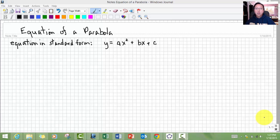Today we're going to learn how to derive the equation of a parabola. A parabola is a type of equation that's called a quadratic equation. And the standard form of a quadratic equation looks like this: y equals ax squared plus bx plus c.